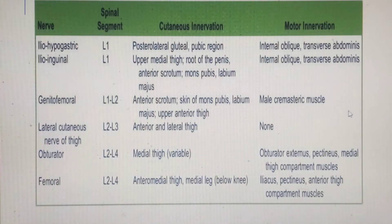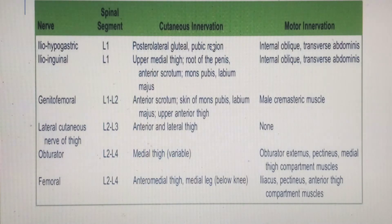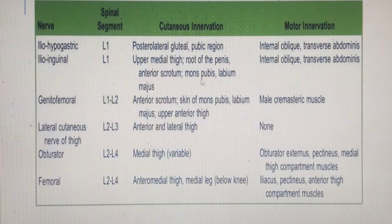In summary: the subcostal nerve from T12; the iliohypogastric nerve from L1 provides cutaneous innervation to the posterior lateral gluteal region and pelvic region, and gives motor supply alongside ilioinguinal to the internal oblique and transversus abdominis (not external oblique). The ilioinguinal nerve also provides cutaneous supply to the upper medial thigh, root of the penis, anterior scrotal region in males, and labia majora in females.